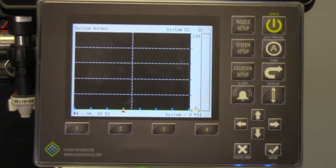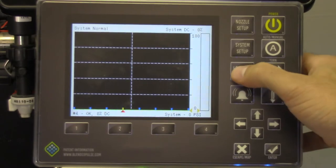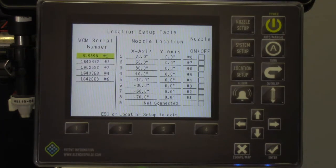Now that you have the information, we can perform our location setup. First, press your location setup key on the display. This will bring you up the location setup table.